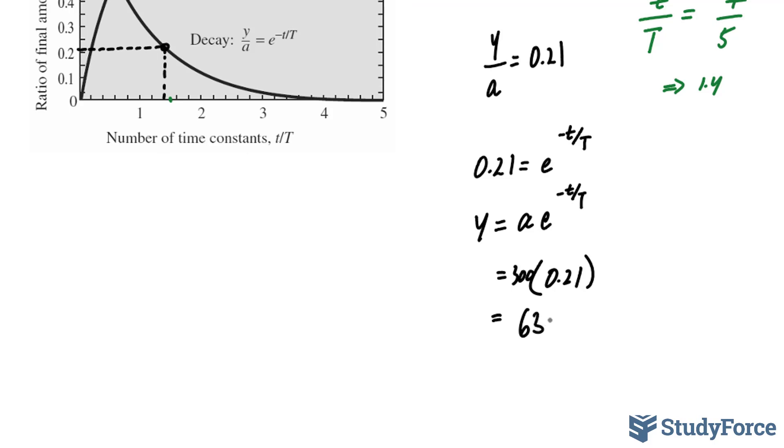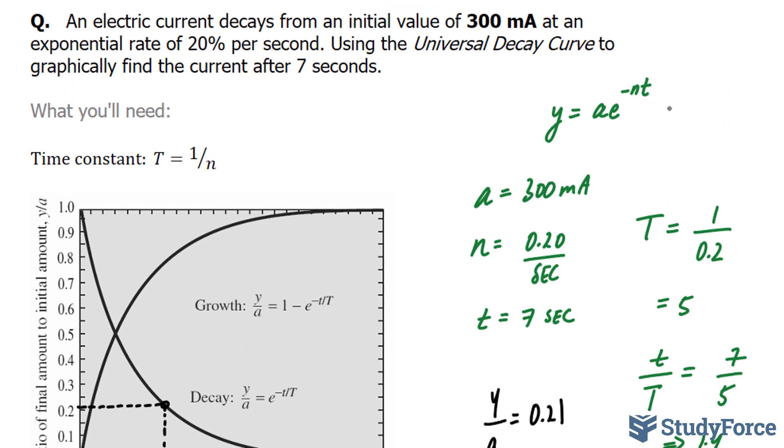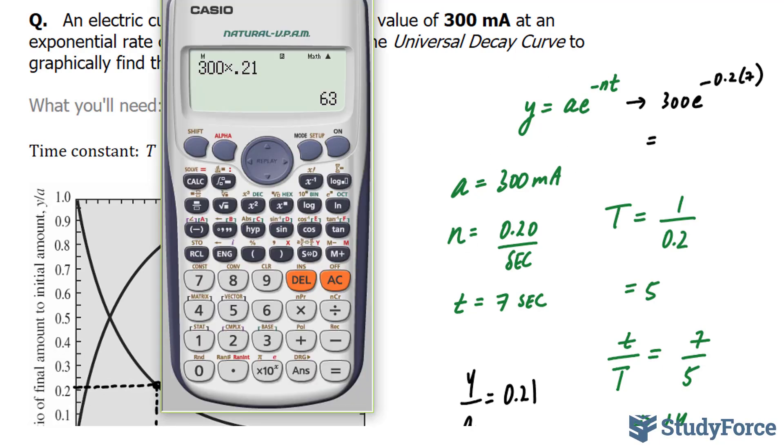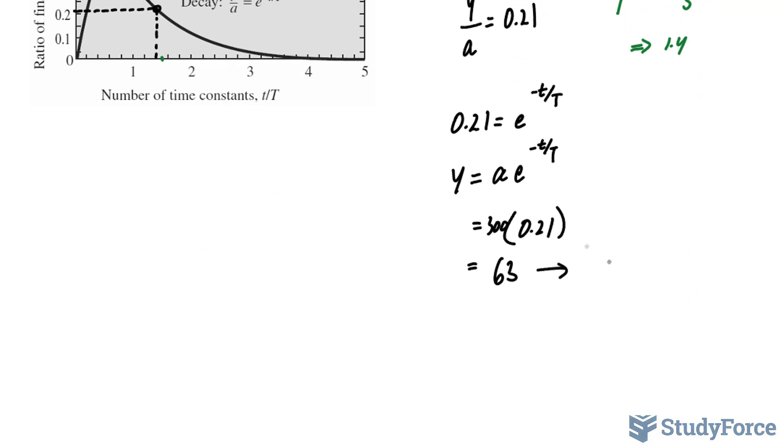Now let's see how accurate we were compared to if we were to calculate from the start, where we have 300 times e to the power of negative 0.2 times 7. 300 times e to the power of negative 0.2 times 7 gives us 73.9 or approximately 74. So we were off by a lot actually. The real number should be approximately 74, 74 milliamps after 7 seconds.